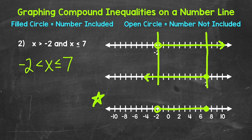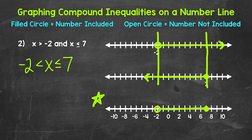As far as solutions, let's try a couple of numbers. Will 3 work for x? Is 3 greater than negative 2 and less than or equal to 7? Yes — so 3 is a solution. How about 10? Is 10 greater than negative 2 and less than or equal to 7? Well, 10 is greater than negative 2, but 10 is not less than or equal to 7, so 10 is not a solution. Anything greater than negative 2 and less than or equal to 7 will work, and we can see that represented on the number line.